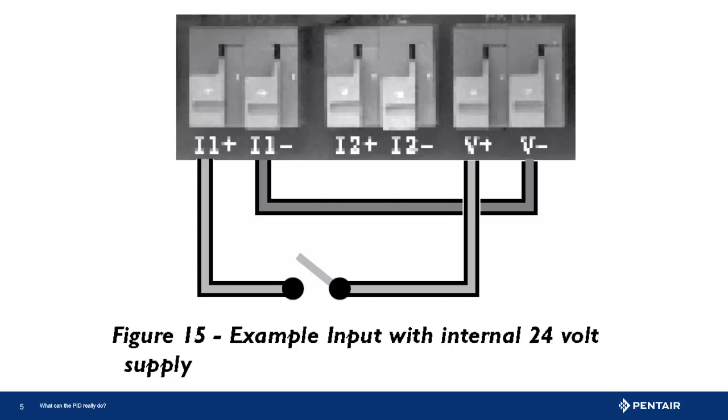Here we see a simple 24 volt connection to an input. Following the flow, the control we wish to use is connected to V+. Going right to left the voltage travels down the wire to the control shown open here. When the control closes the voltage flows to the input, in this case input 1 plus side. Now to complete the circuit, a wire or jumper is connected to input 1 negative. The other end of the jump wire is connected to V negative and completes the circuit.